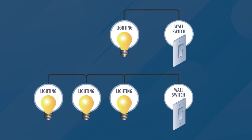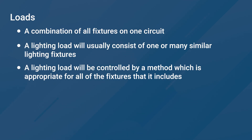A lighting circuit is commonly denoted on lighting plans by drawing curved lines between each fixture. These fixtures are controlled and operated as one, but a circuit can contain more than one type of fixture. A lighting load is similar in description to a circuit, but it usually consists of identical fixtures so that they can be controlled by one specific method. You may see both load and circuit used synonymously, so it is important to review documentation carefully to ensure the correct control method is being used.